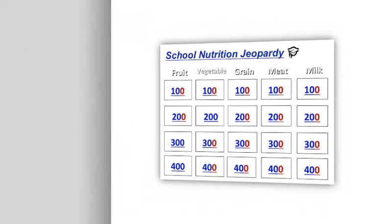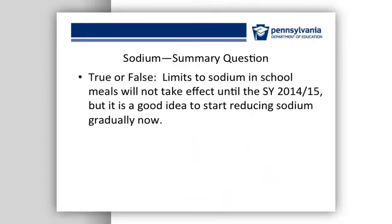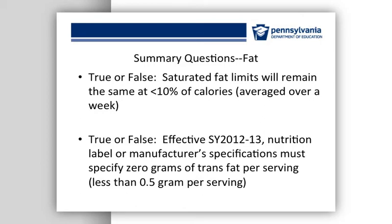Now, as a summary, we will answer some nutrition jeopardy questions. True or False: Effective school year 2012-2013, lunch meals will have to provide a minimum and maximum amount of calories averaged over a week. This is true. True or False: Limits to sodium in school meals will not take effect until the school year 2014-2015, but it is a good idea to start reducing sodium gradually now. This is also true. True or False: Saturated fat limits will remain the same at less than 10% of calories averaged over a week. True or False: Effective school year 2012-2013, nutrition label or manufacturer specifications must specify 0 grams of trans fat per serving, meaning less than 0.5 grams per serving. These are also both true.